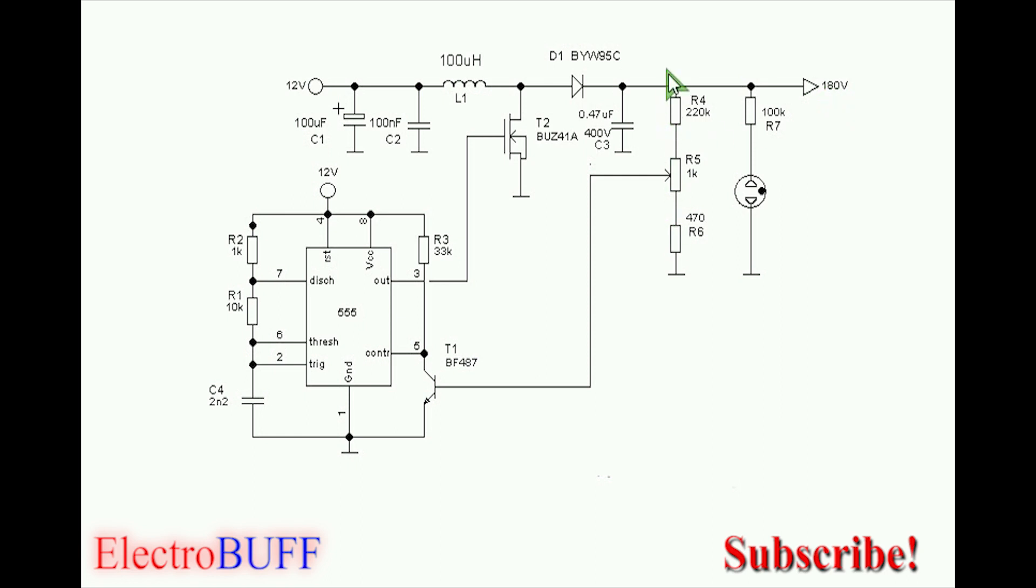This feedback network allows you to fine-tune the output voltage. What happens is when the voltage at this point here gets to about 0.7 volts, the feedback transistor - the BF487, you can even use the BC547 - will turn on and connect the control voltage to ground. When the control voltage is connected to ground, the output at pin 3 will be immediately turned low.